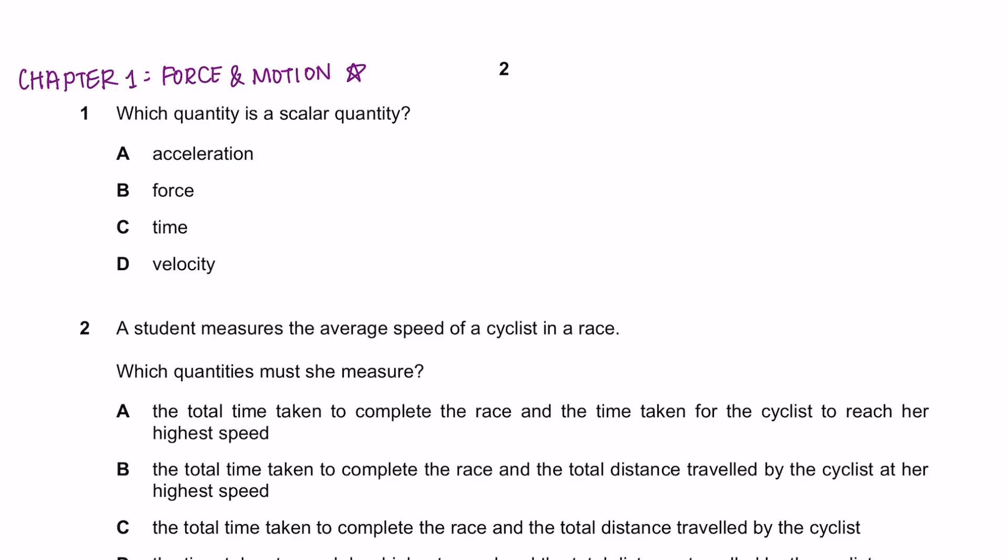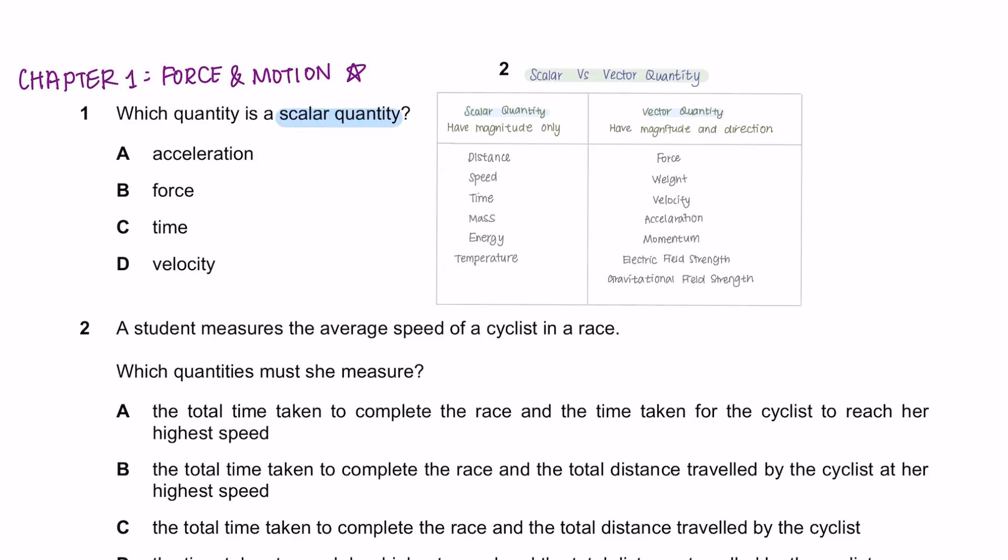Question 1. Which quantity is a scalar quantity? Make sure you're familiar with scalar versus vector quantity. Scalar quantities have only magnitude whereas vector quantities has both magnitude and direction. You can take a screenshot of this table. A scalar quantity here would be time, so the answer is C.